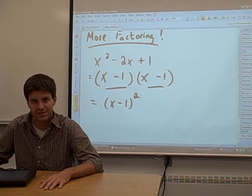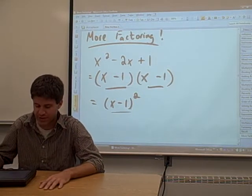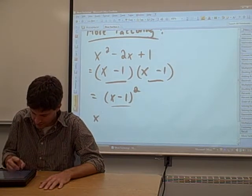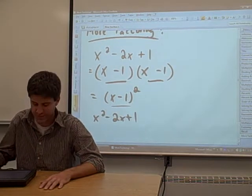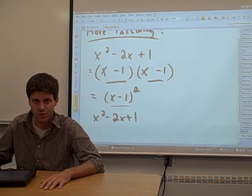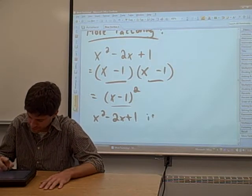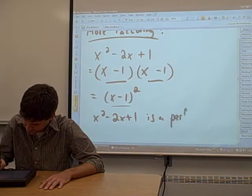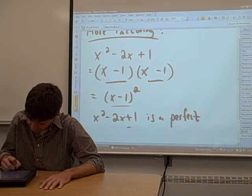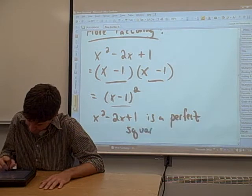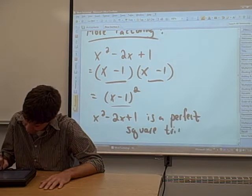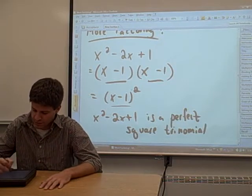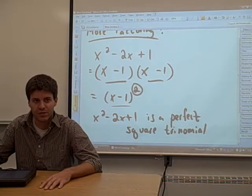Whenever you can factor something like this, and it comes down to what's called a perfect square, x squared minus 2x plus one. This trinomial is called a perfect square trinomial. That's because when we factor it, we end up with a binomial square.